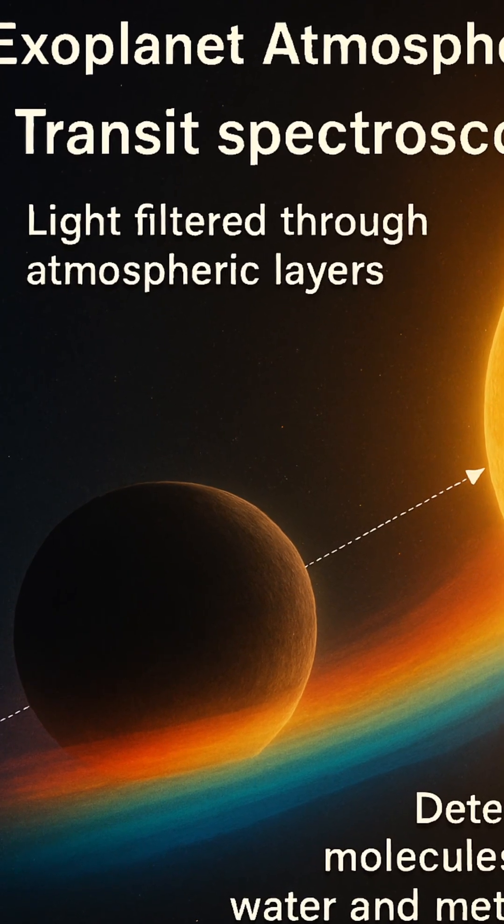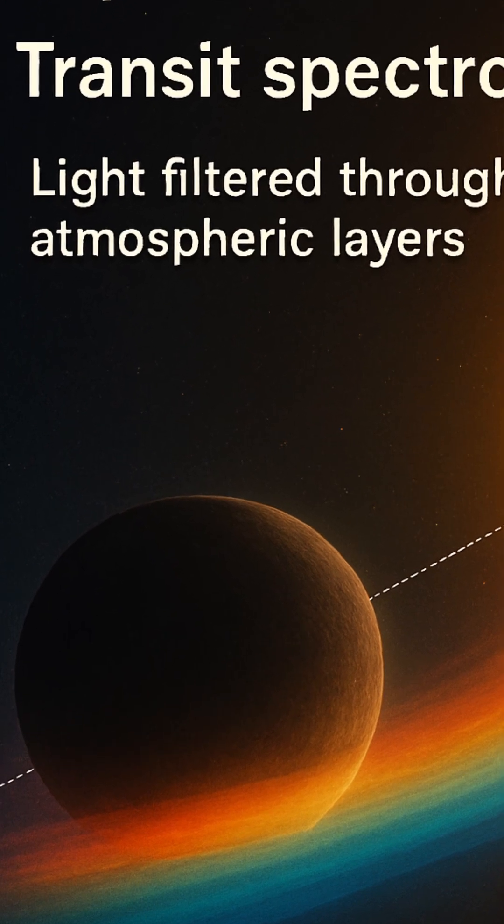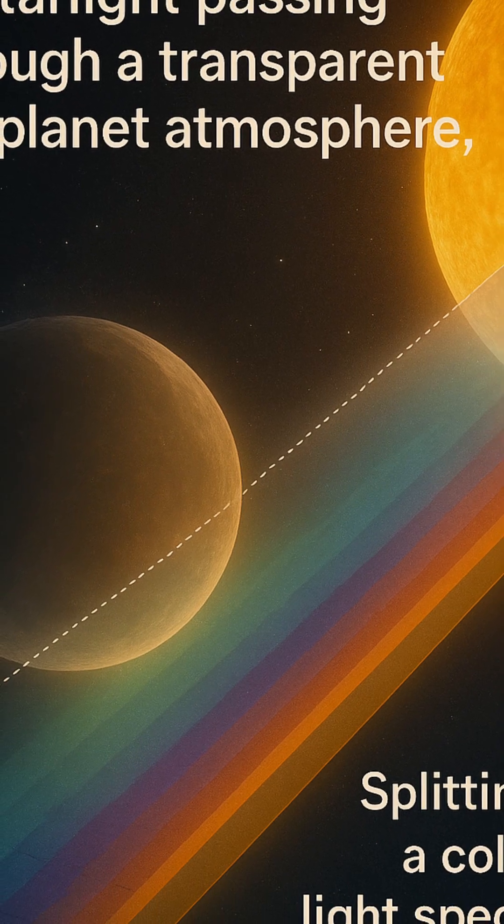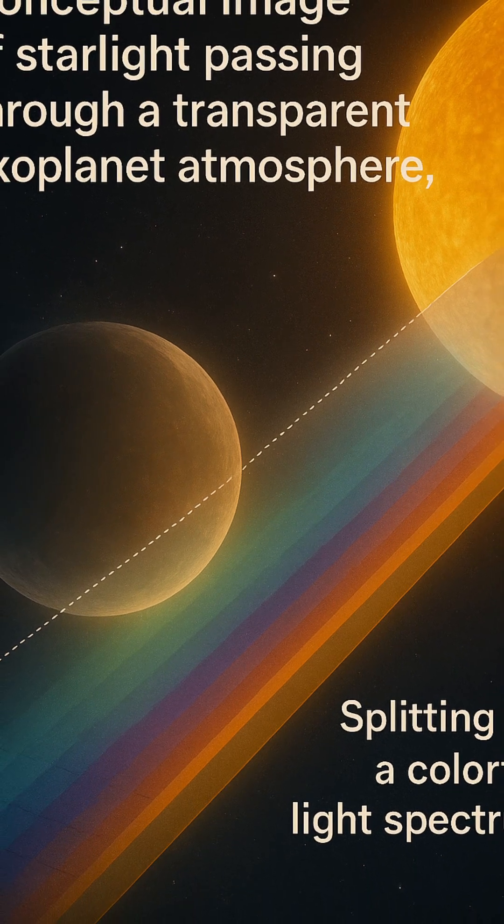It begins when an exoplanet passes or transits in front of its host star. During this fleeting alignment, a small fraction of starlight filters through the planet's atmosphere before reaching Earth. This starlight carries subtle clues.